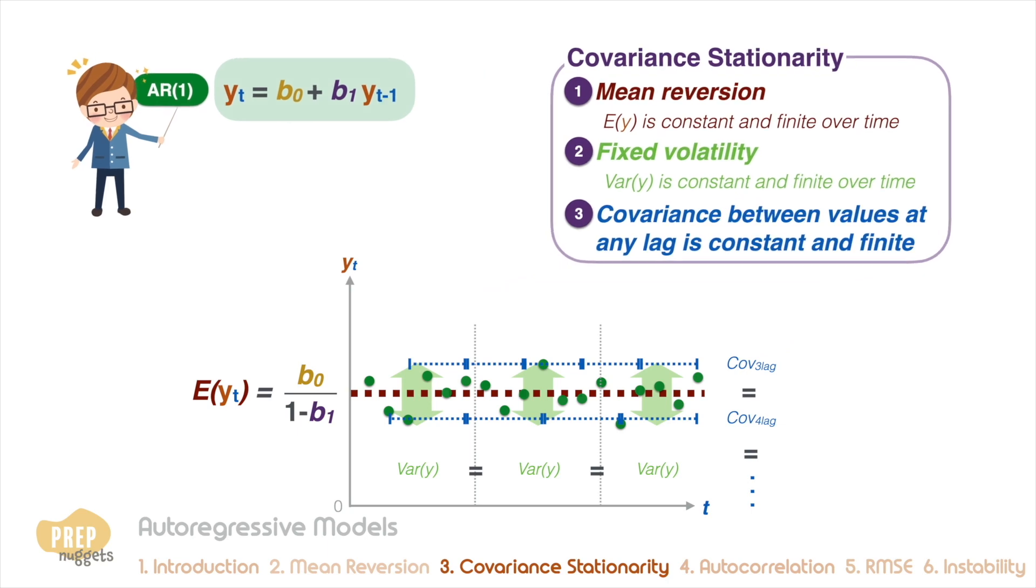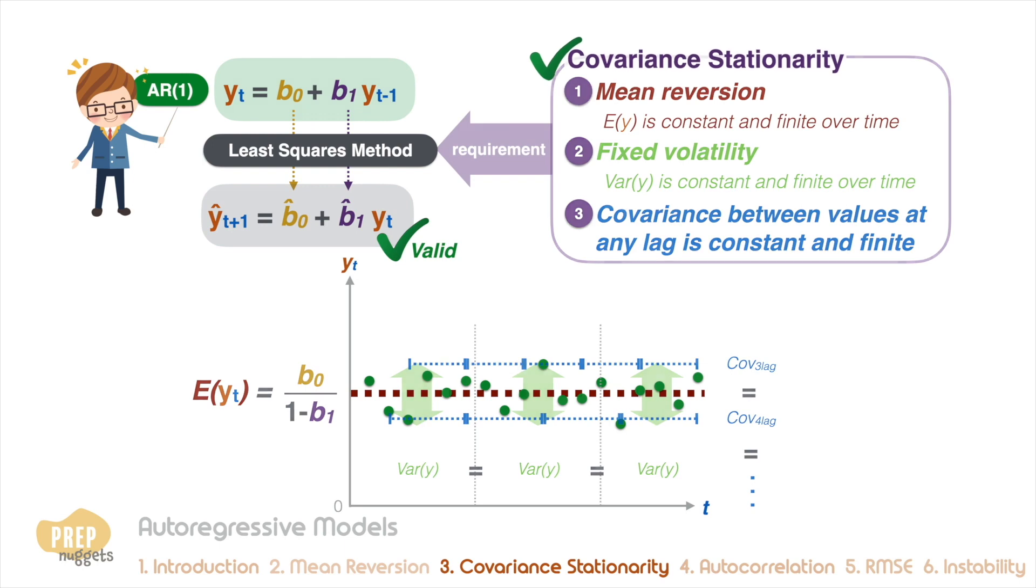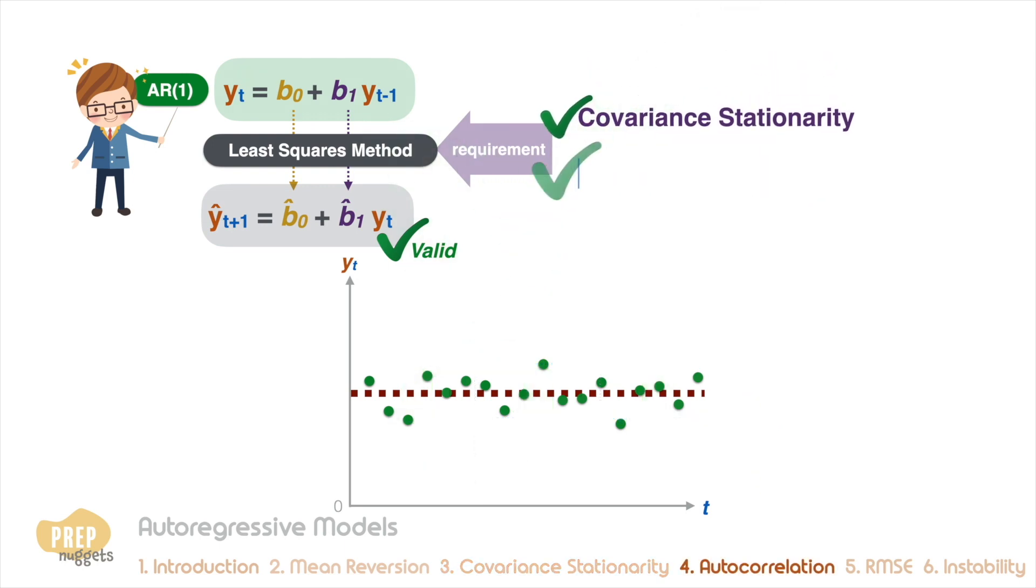Determining covariance stationarity is important because it's required for ordinary least squares estimation of an AR model to be valid. Another important requirement for models using the ordinary least squares method to be valid is that the residual terms do not exhibit autocorrelation.